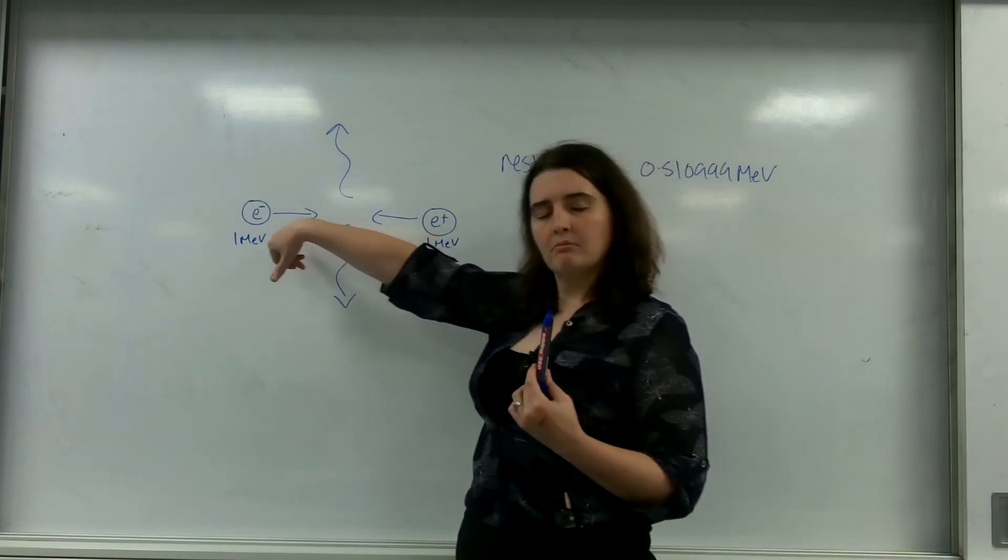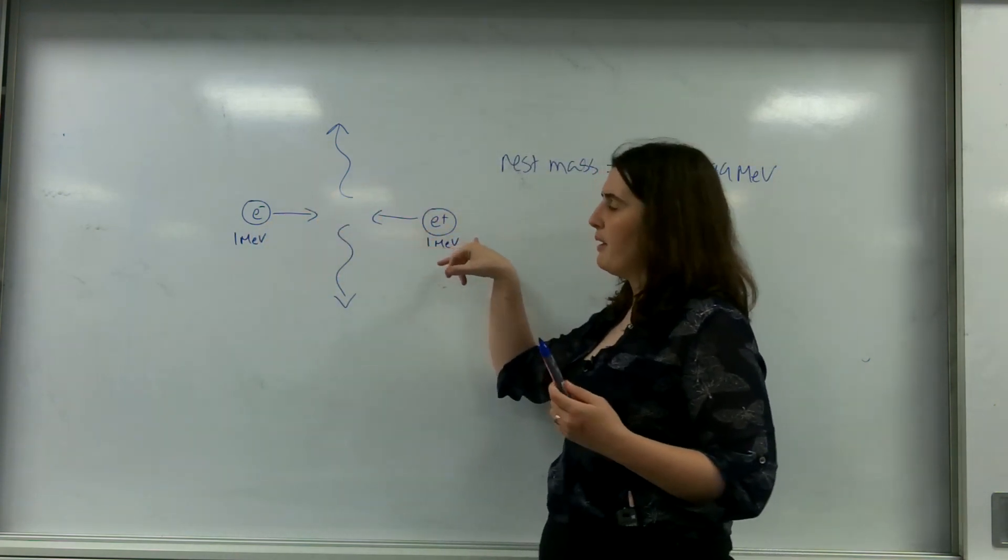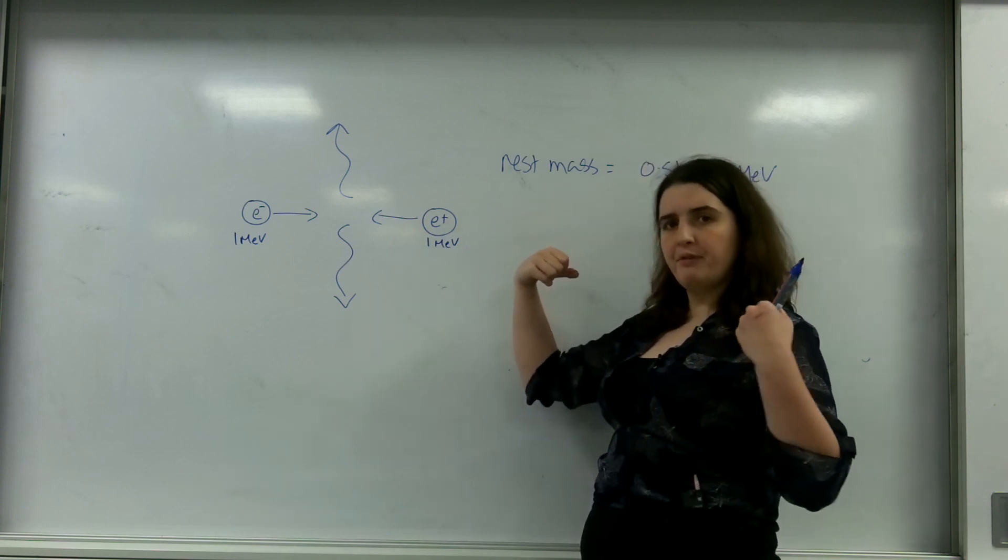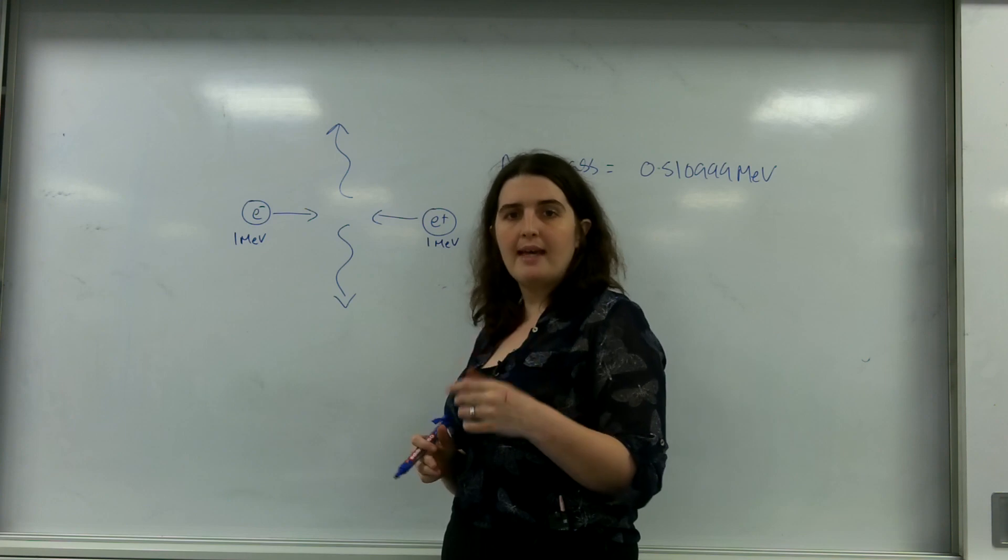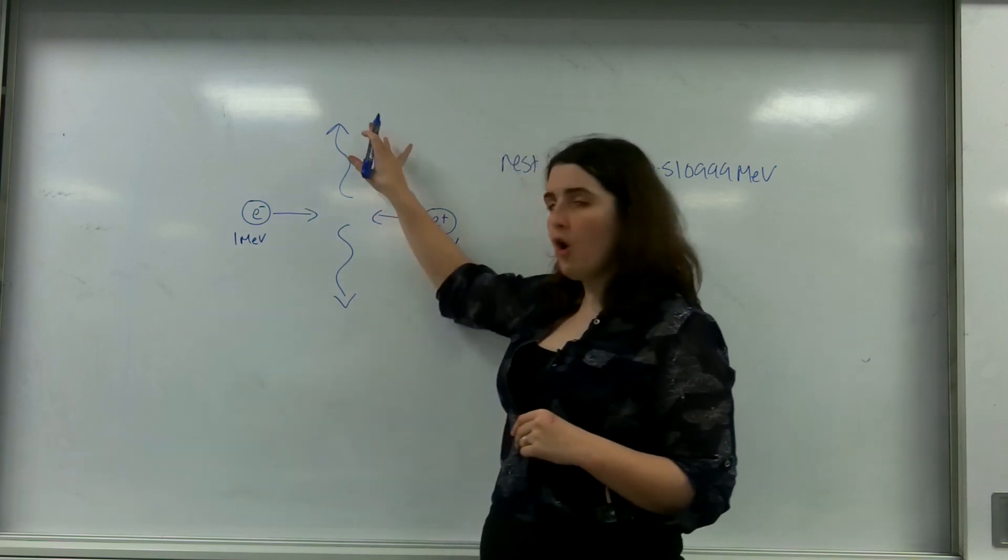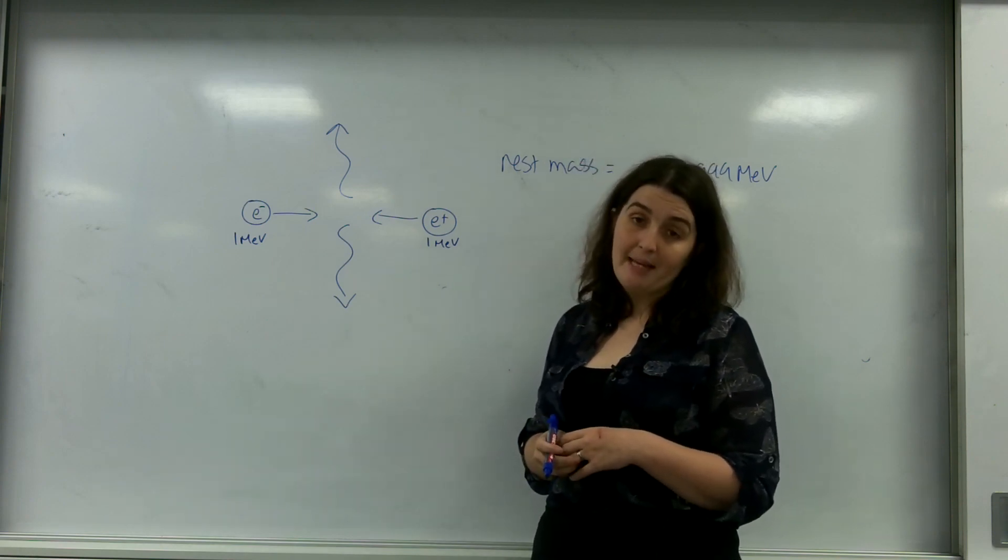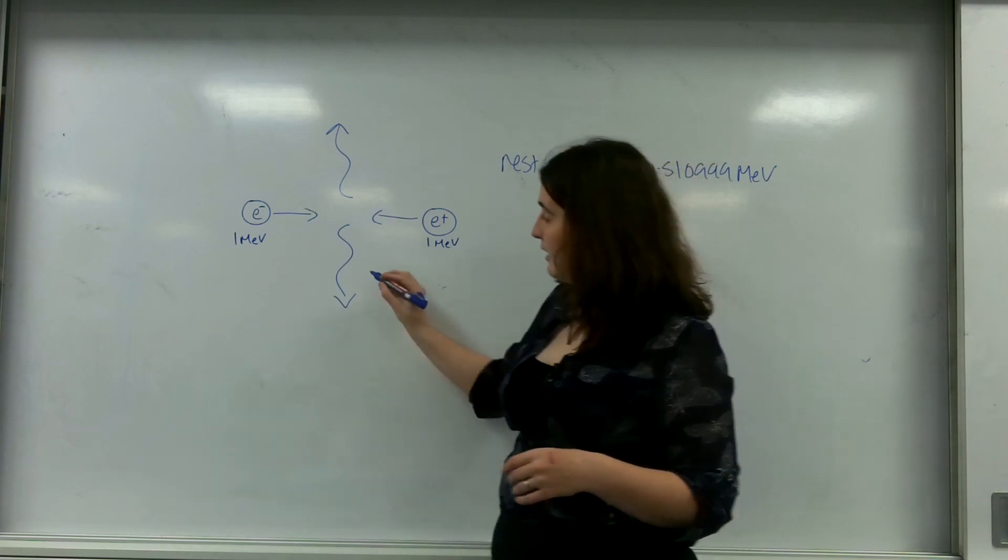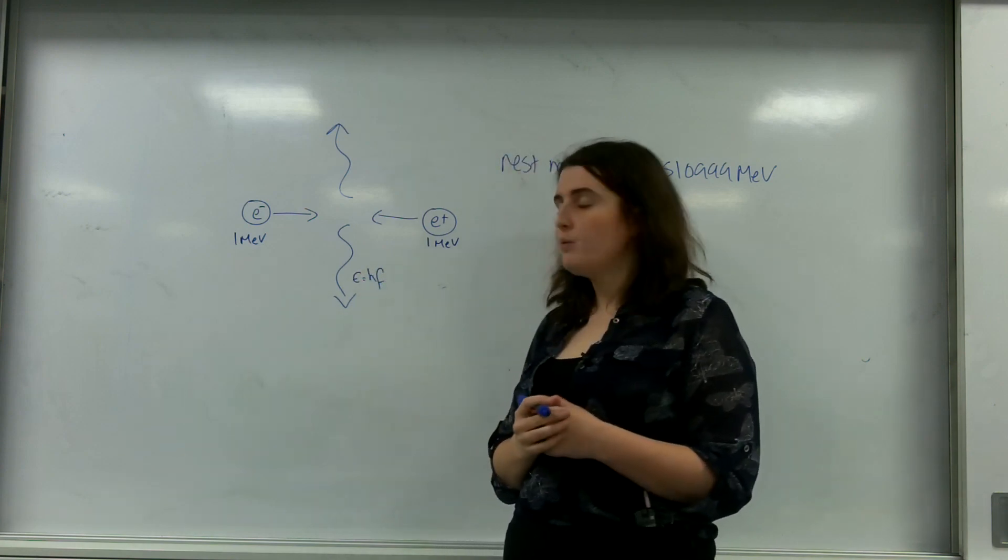So I have an electron and its positron, so a particle here and an antiparticle, and they're being flung together both with one mega electron volt's worth of energy. I want to find out what frequency, and therefore wavelength, these photons would be. And remember, the energy of a photon is E equals HF.